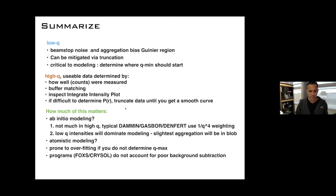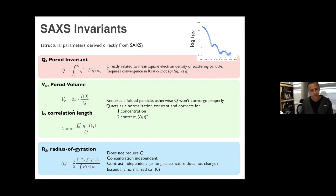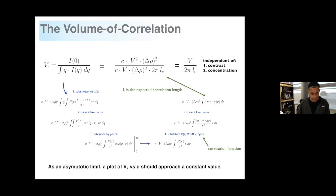When analyzing SAXS data using Scatter, we're initially interested in what we call the SAXS invariants. These include the Porod volume — the effective volume of the scattering particle — the correlation length, which describes how well the particle correlates with itself under small displacements, and the radius of gyration Rg, which is the distribution of mass formally defined as the second moment of the P(r) distribution.